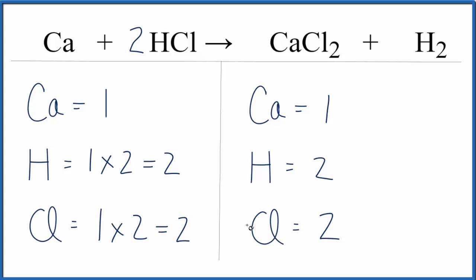This is Dr. B with the balanced equation for Ca plus HCl. That's calcium plus hydrochloric acid. You have CaCl2 plus H2, calcium chloride and hydrogen gas. Thanks for watching.